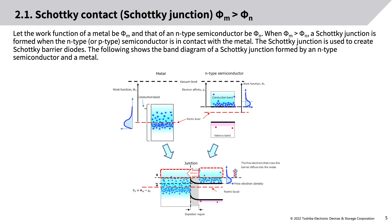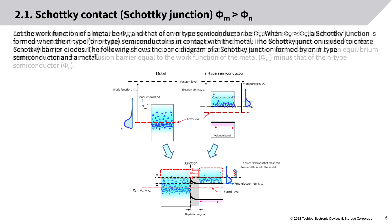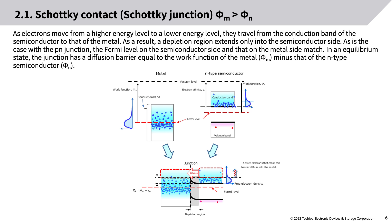Schottky contact — Schottky junction (Phi_M > Phi_N): The Schottky junction is used to create Schottky barrier diodes. The following shows the band diagram of a Schottky junction formed by an N-type semiconductor and a metal. As electrons move from a higher energy level to a lower energy level, they travel from the conduction band of the semiconductor to that of the metal. As a result, a depletion region extends only into the semiconductor side.